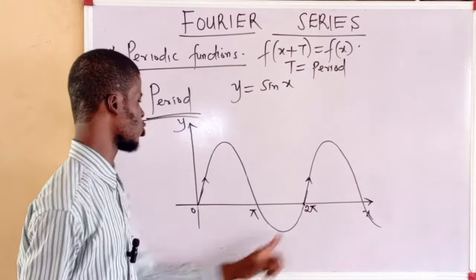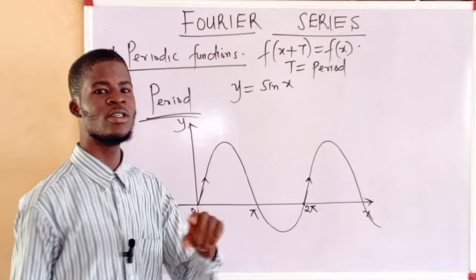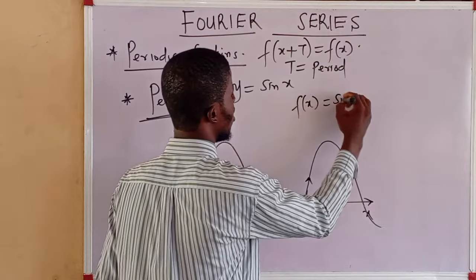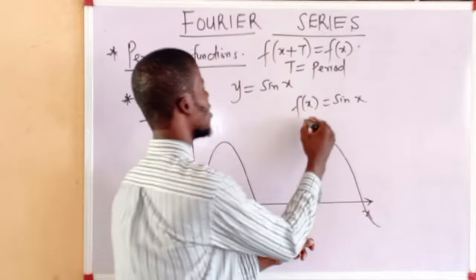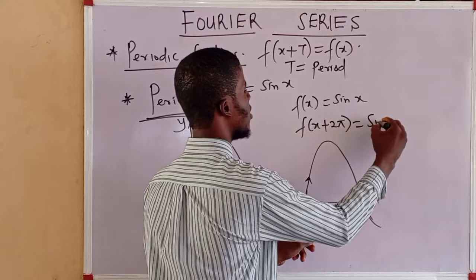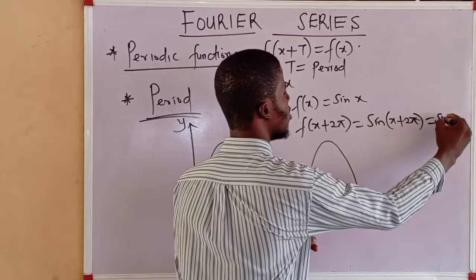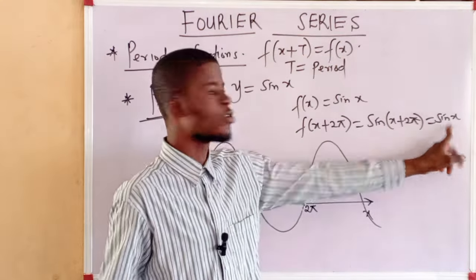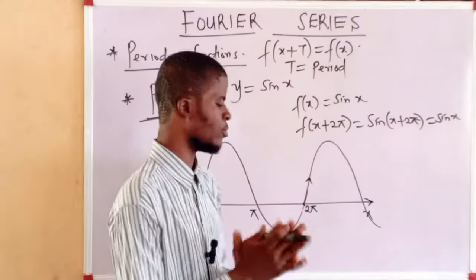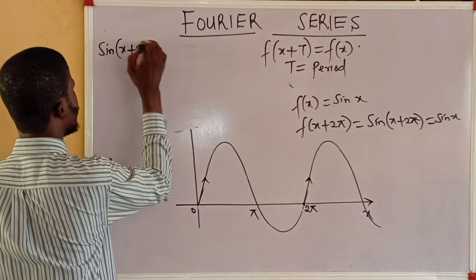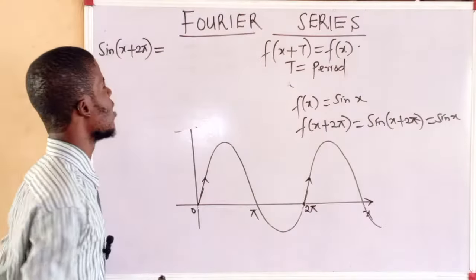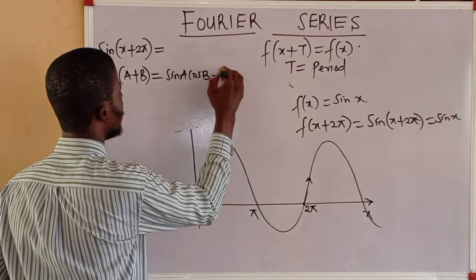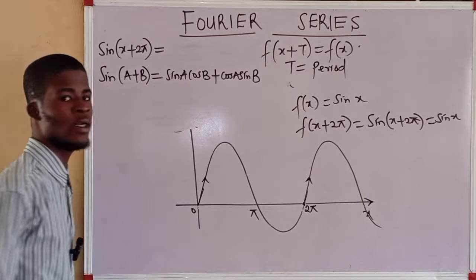I want to show you using trigonometric identity that 2π is the period of sin(x). If f(x) = sin(x), then the period being 2π means that f(x + 2π) = sin(x + 2π) = sin(x). Let me show this. sin(x + 2π) is the sine of a sum, and in trigonometry: sin(a + b) = sin(a)cos(b) + cos(a)sin(b).